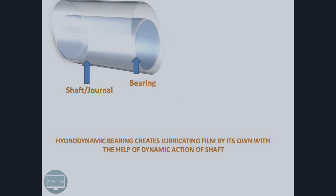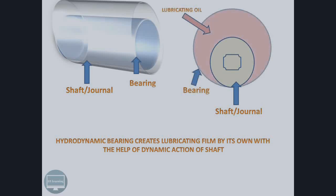Now see the height view of the drawing. This is the shaft or journal and this is the bearing. And in between these two there is a lubricating holder.